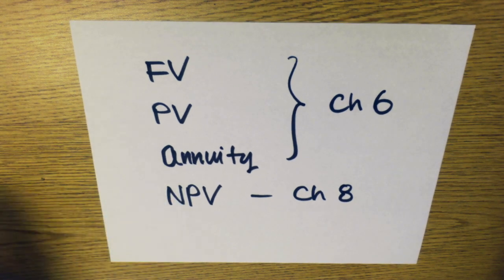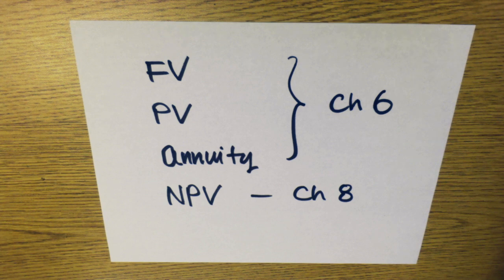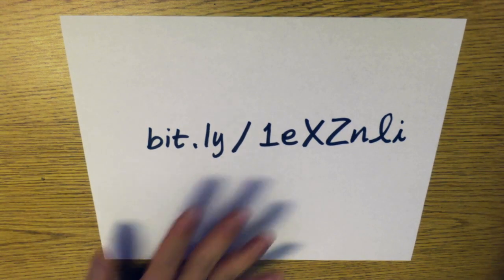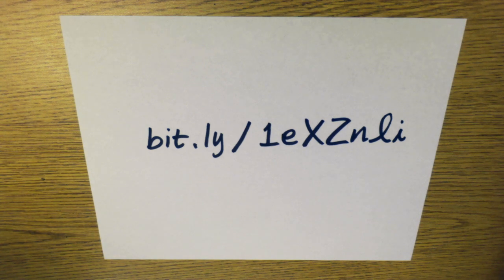All right, so that concludes my faceless tutorial on the time value of money. If you want to know further, you can look at your HP calculator manual. The first three topics, FV, PV, and annuity, are in chapter six. And for a more detailed cash flow analysis to do NPV, you can look at chapter eight. If you want to practice further with some more examples, you can go to HP's website. I've shortened it using bitly, so the address is bit.ly/1EXZNLI, and you will find a lot of examples from HP's website. All right, hope you enjoyed it and hope you do well in the upcoming class on time value of money. Thanks.